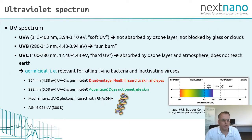The ultraviolet spectrum can be divided into three regimes: UVA, UVB and UVC. UVA, for instance, is not absorbed by the ozone layer and not blocked by glass or clouds. UVB causes sunburn. The hard UV radiation is absorbed by the ozone layer and the atmosphere and does not reach the Earth.